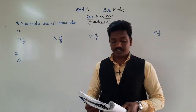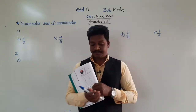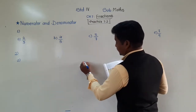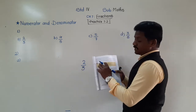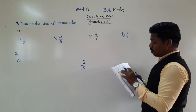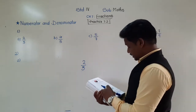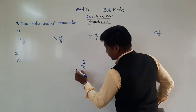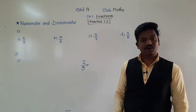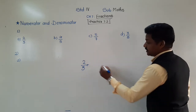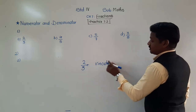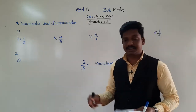Fill in the blanks. Quick Check first question: in the fraction 2 by 3, the bar drawn in between is called — what is it called? I just told you — vinculum. So, write vinculum in that empty space.